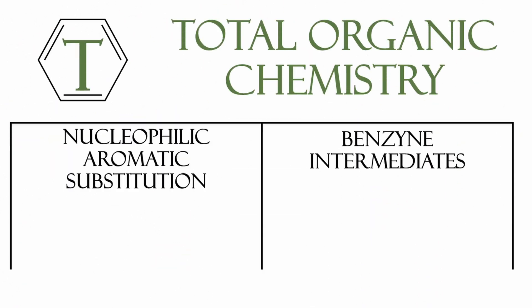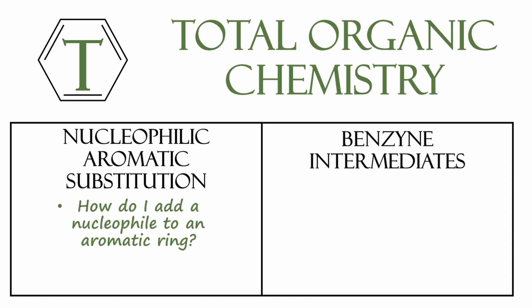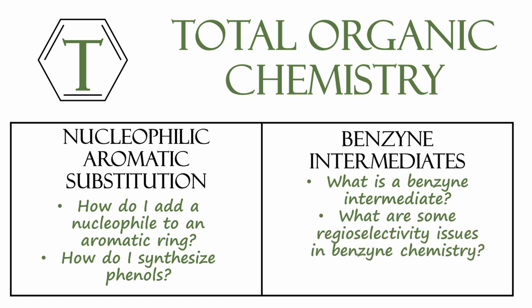Hello everyone, and welcome back to another episode of Total Organic Chemistry. This video, we're going to be taking a look at nucleophilic aromatic substitution and benzyne intermediates. By the end of this video, the questions you should be able to answer are: how do I add a nucleophile to an aromatic ring, how do I synthesize phenols, what is a benzyne intermediate, and what are some issues in regioselectivity that we encounter in benzyne chemistry.